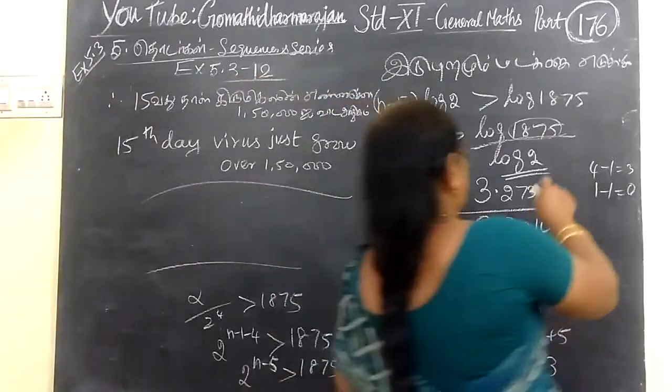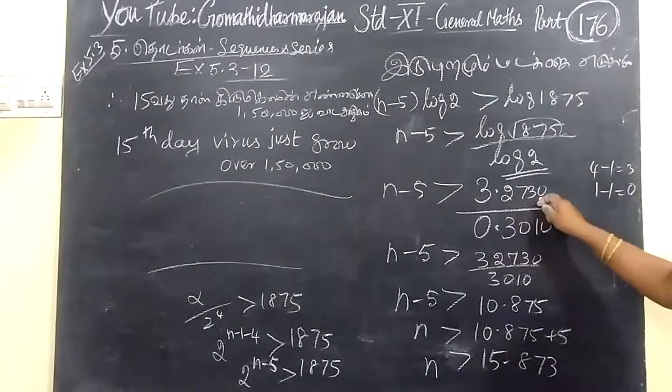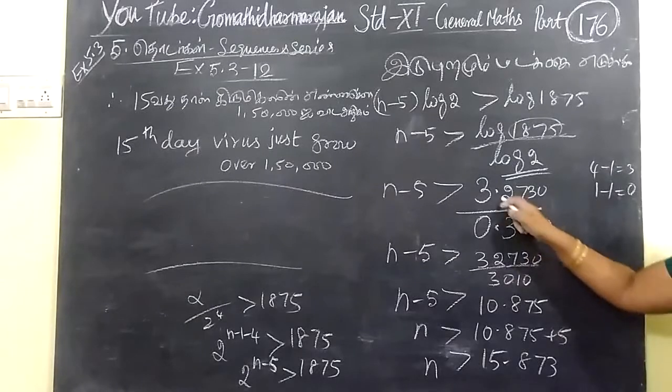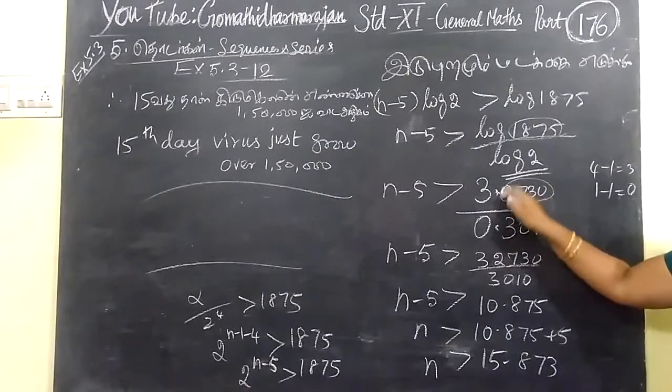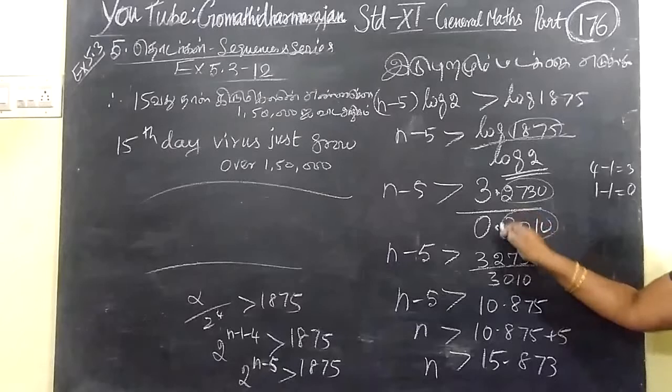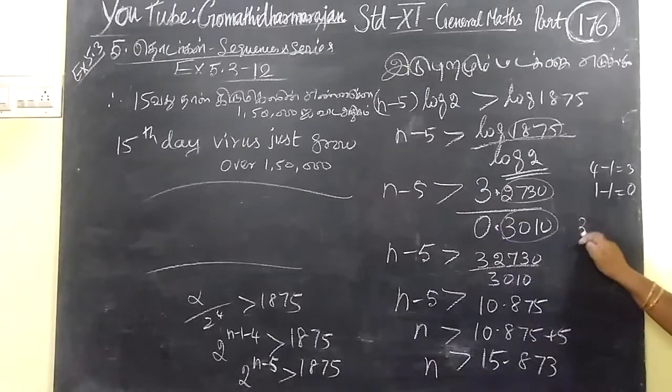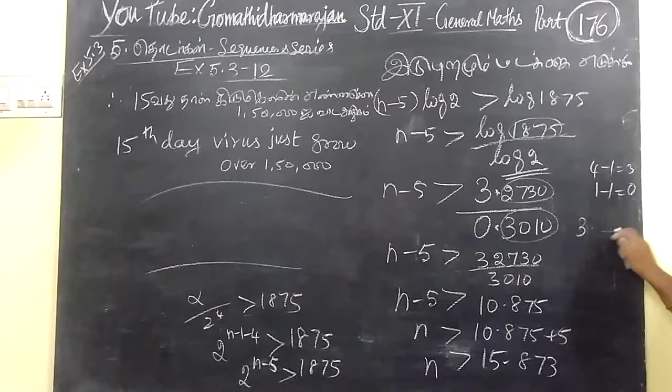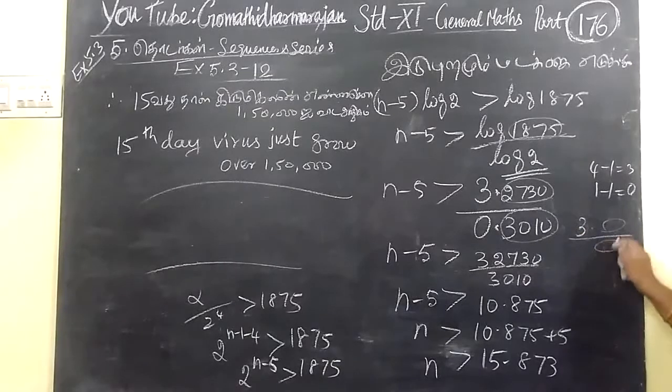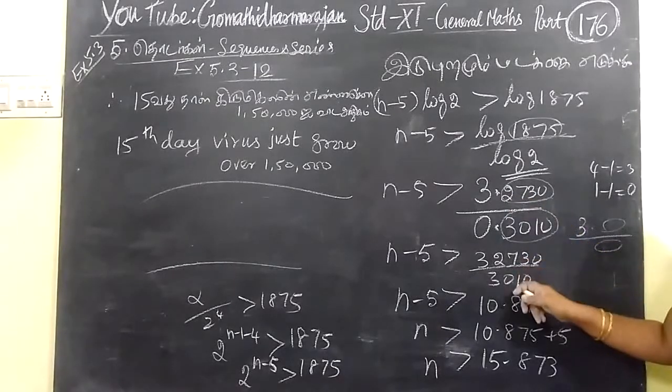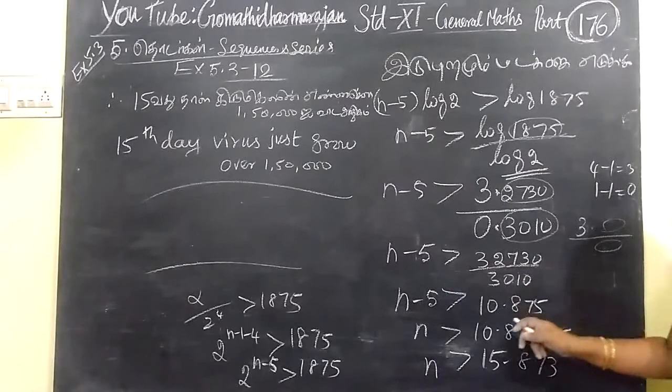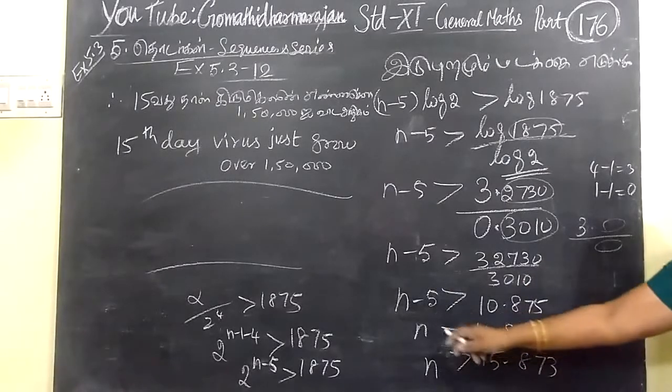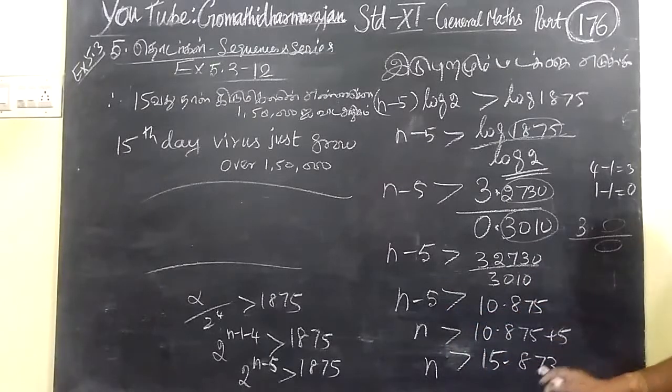So, here we have the calculation. Log 1,875 is 3.273. This is 4 digits. Without the decimal point. After this, divide by 0.3010 to get the result. n-5 equals 10.873, so n equals 15.873.